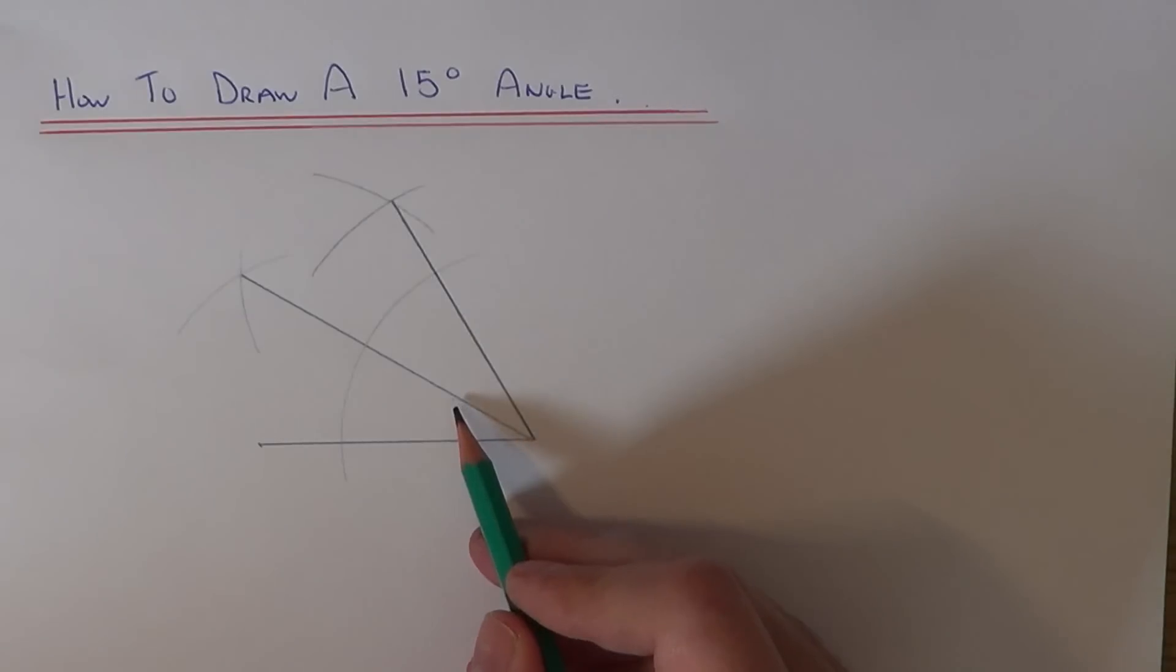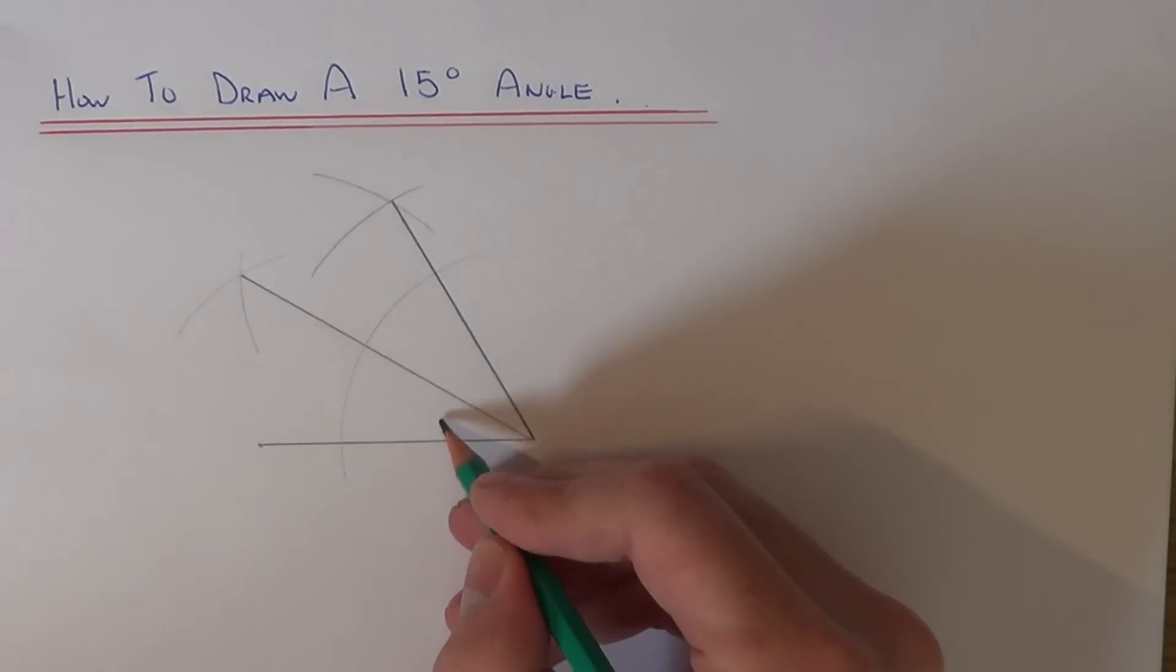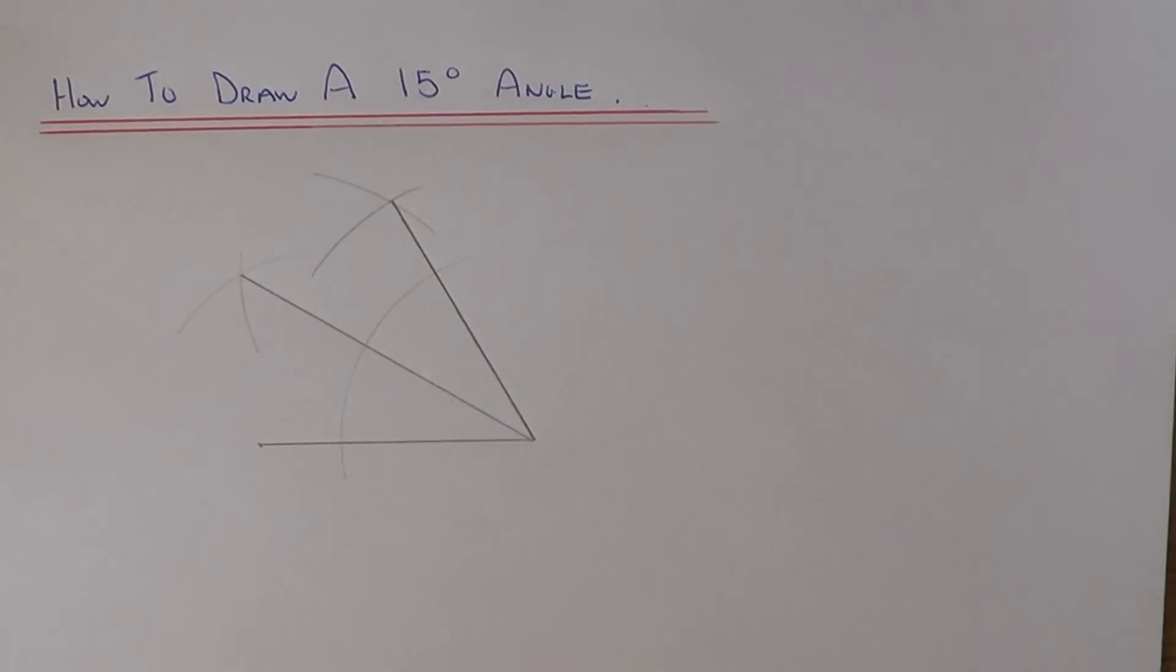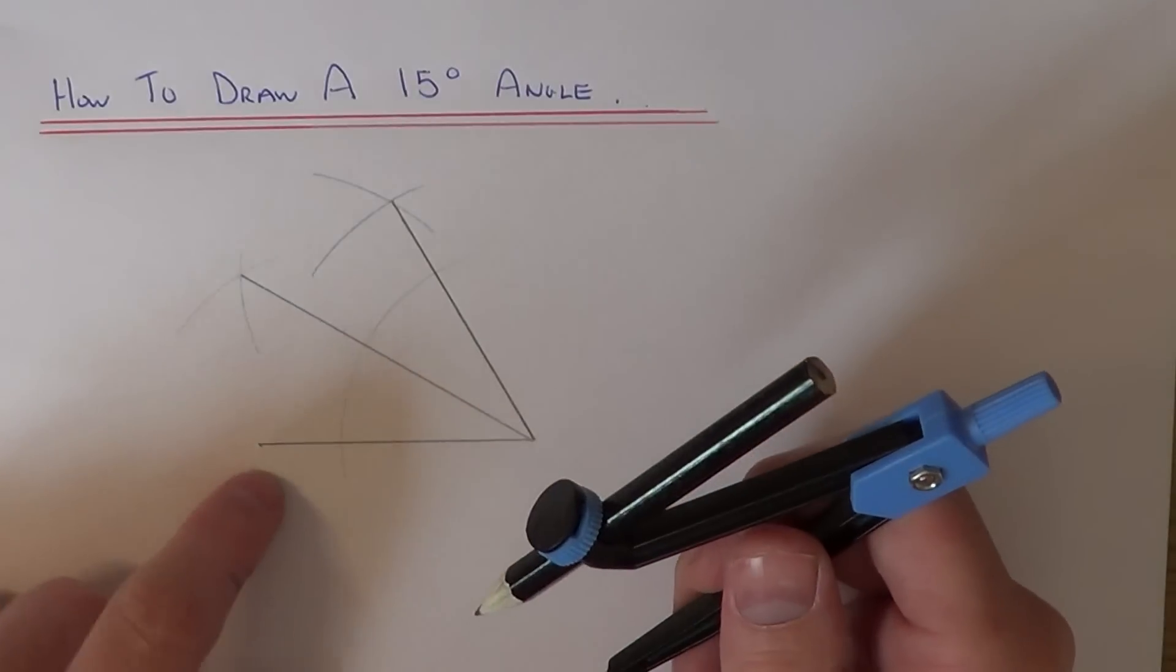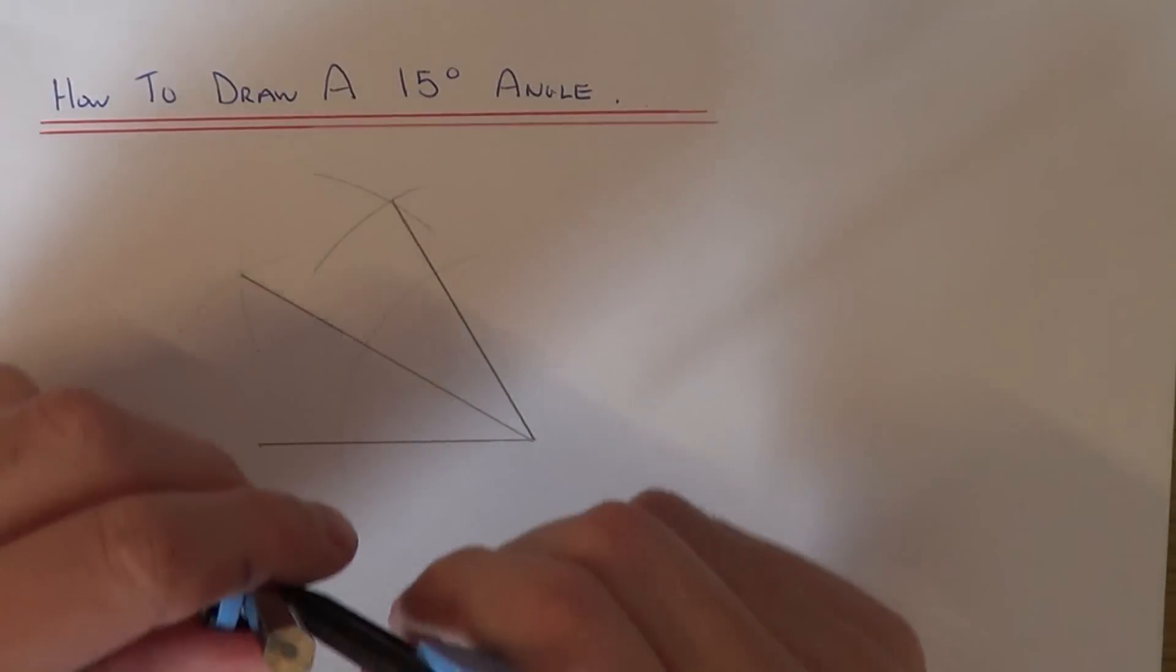We're now going to bisect this angle here. Again, do an arc going across this line and this line.